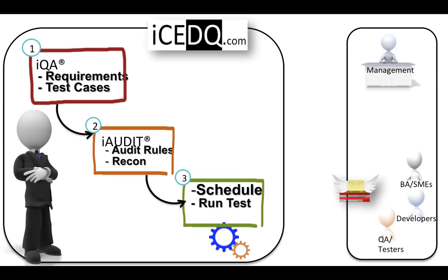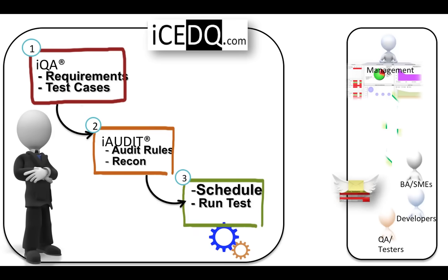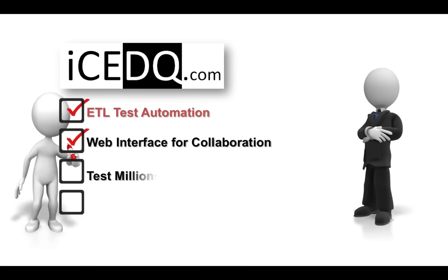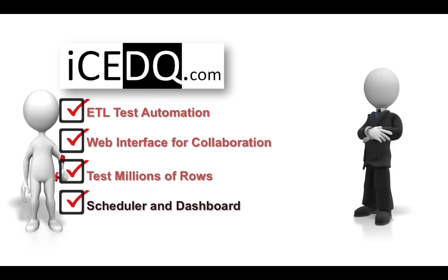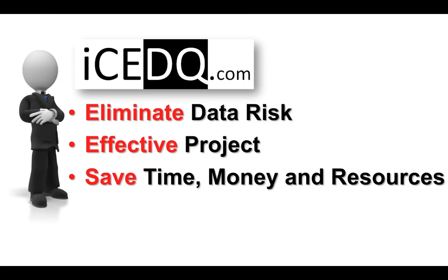With these three steps you are basically done. IceDQ not only automates testing, it makes it effective. It also provides a collaboration platform that communicates with management, developers, testers, and business users regardless of location. You get an easy-to-use tool to automate your ETL testing with a collaborative web interface. Testing is not just limited to random data sets — you can automate testing of millions of rows. Schedule your rules to run anytime and get feedback via the dashboard. With IceDQ you not only eliminate data quality risk, but also run the project effectively, saving time, money, and resources.